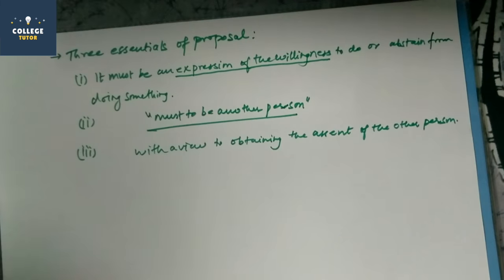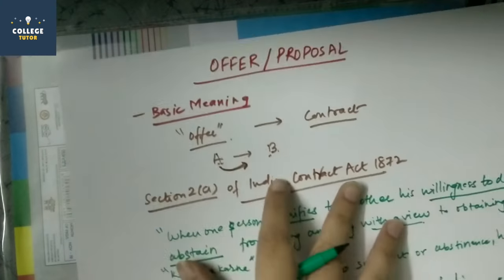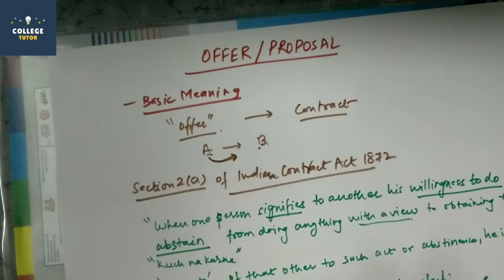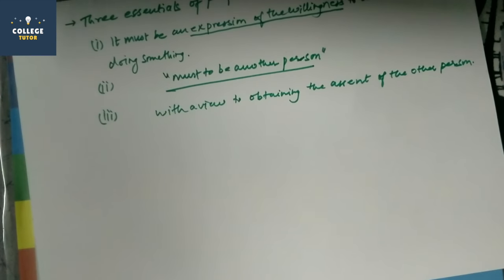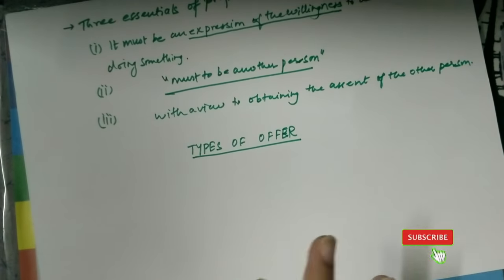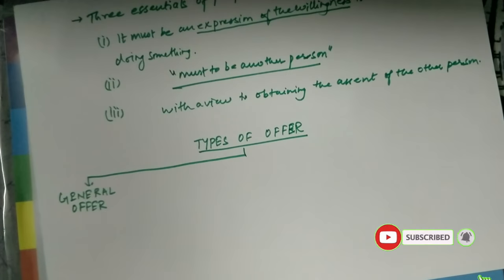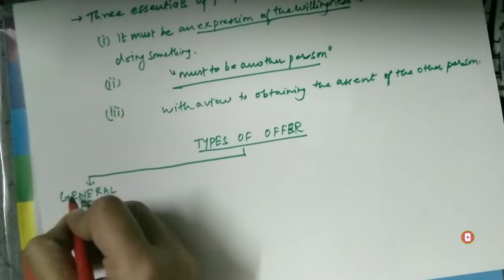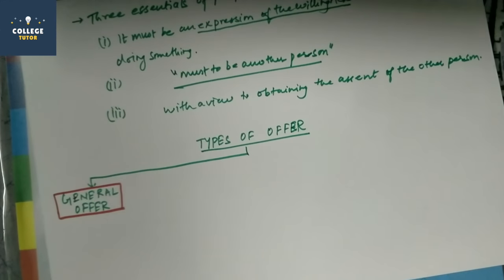Now, after we have understood the meaning, we know the proposal and offer are basically used interchangeably, they both have same meaning. Now we have come to the types of offer. Now there are five types of offer. The first one is general offer. What is general offer? As the name suggests, this general offer means that offer made in public or made to everyone.